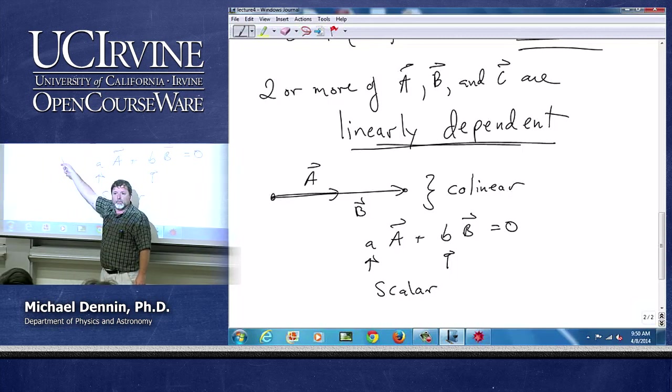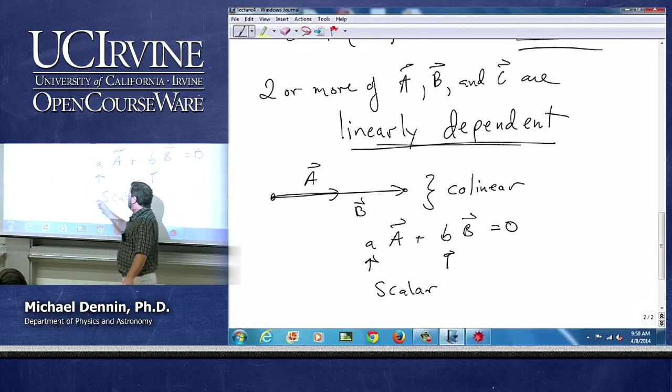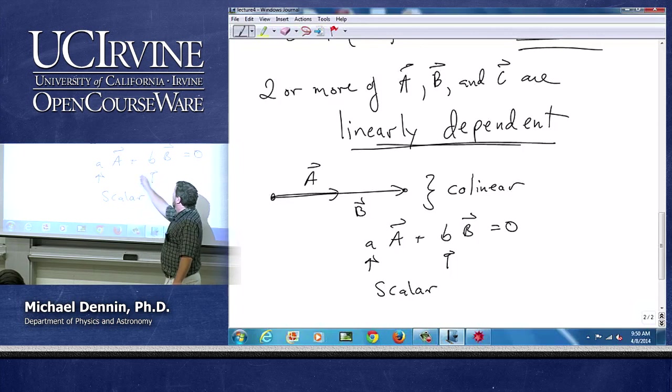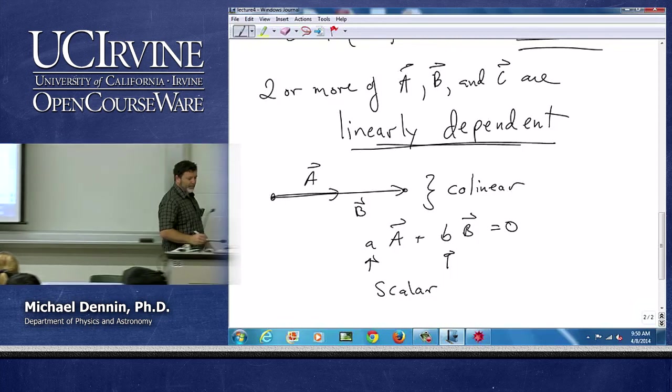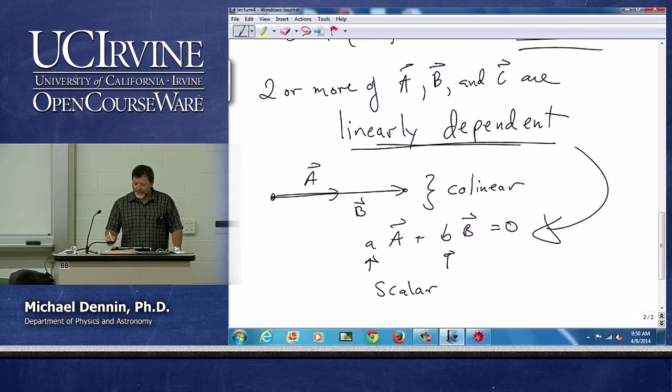But geometrically, it's obvious what we mean by linearly dependent. Linearly dependent is if I can get this to be true with a and b non-zero. That's linearly dependent. That's exactly the definition.